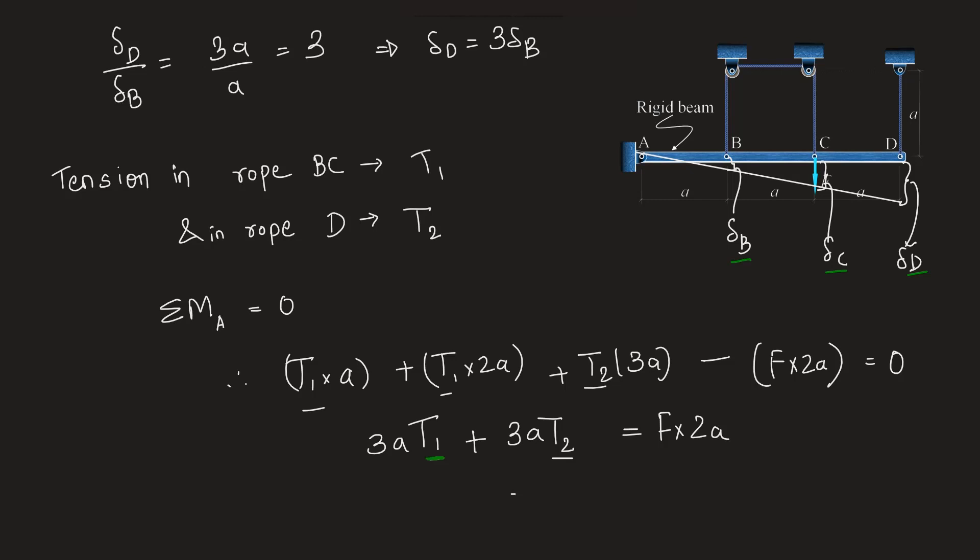We can write down delta in terms of T. These ropes are axial members because they will only be strained axially. Also, they can take only axial loads, and therefore we can write deflection in the string or deflection in the ropes delta B to be T1 into L by AE. This is a standard formula you must know. It comes from the relationship between axial stress and axial strain. We can also write delta D as T2L upon AE. A and E both are given equal for both the ropes.